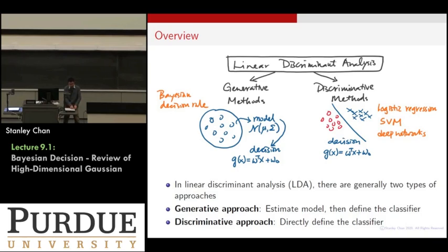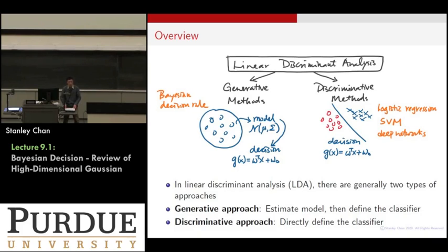In the generative methods, we are going to spend time on Bayesian decision rules. You will learn about high-dimensional Gaussians — how to estimate the mean, how to estimate the variance, and how to construct the decision boundary. For the discriminative methods, you are going to learn logistic regression, support vector machines, and neural networks — a very popular technique nowadays. We will spend time on the generative methods first because they are more statistical, slightly easier to understand, and have a lot of interpretation you can draw from the results.